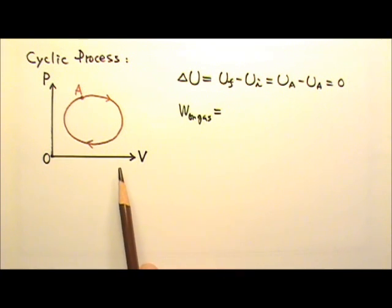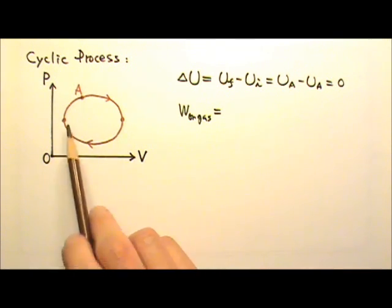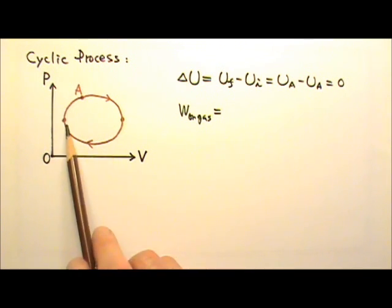Which part of the graph do you think can tell us about the work done on the gas in this cyclic process? It may be convenient for you to break this cyclic process into two parts, the top part and the bottom part.